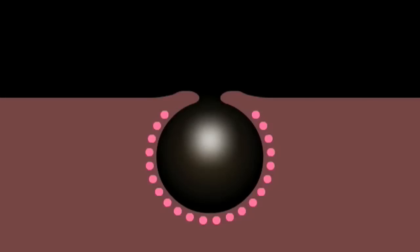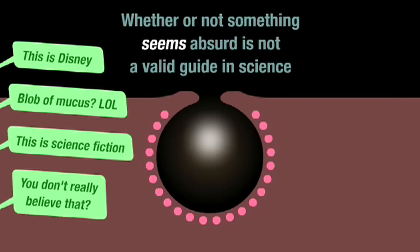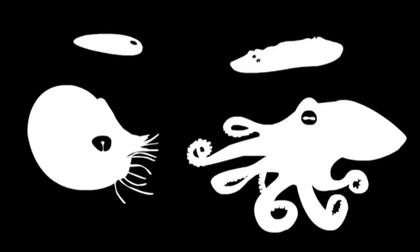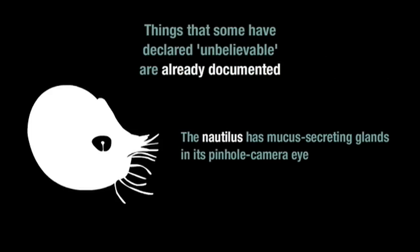The blob of mucus stage in the eye evolution sequence attracted a few incredulous responses. No refutation, just incredulity. Not only did I explain how seeming unbelievable is not a valid guide in science, I cited animals that related to the stages illustrated, including the Nautilus, which has mucus-secreting glands in its pinhole camera eye. So things that some have declared unbelievable are already documented.